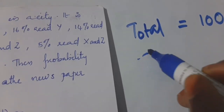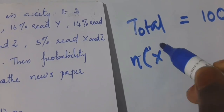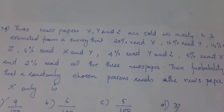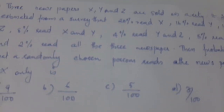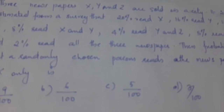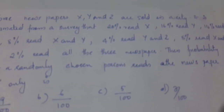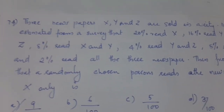X is the newspaper: n(X) = 20, n(Y) = 16, and n(Z) = 14.